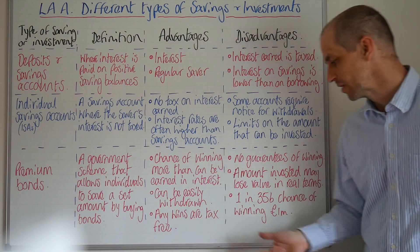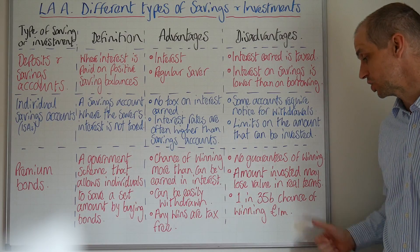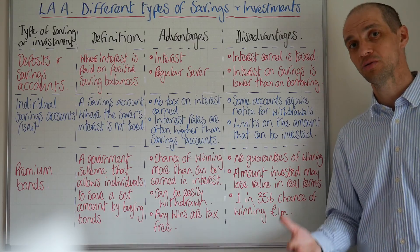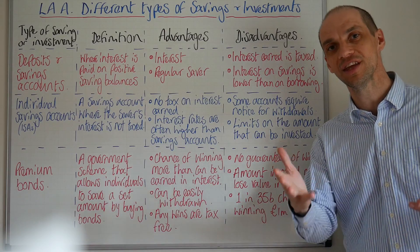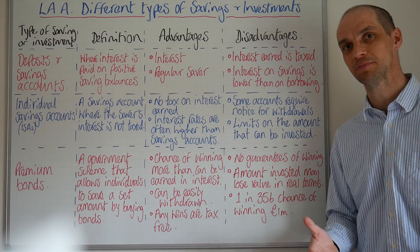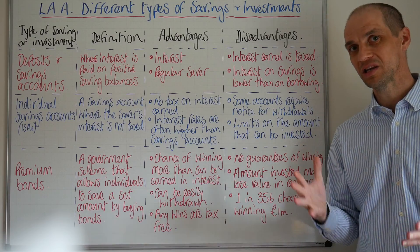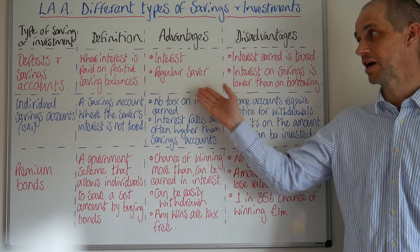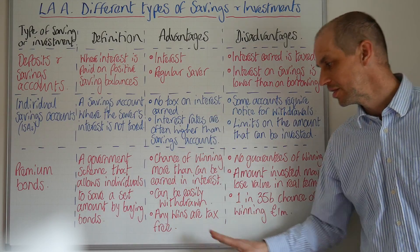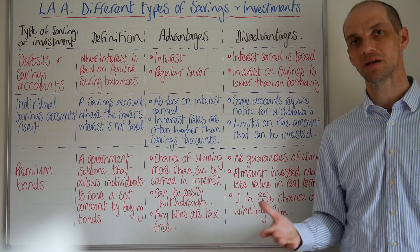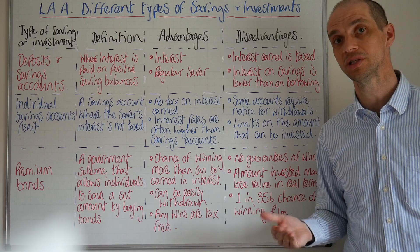There is actually a one in £36 billion chance of winning £1 million, so the chances are considerably worse than the lottery — participating in the lottery actually has a better chance of winning the top prize. So premium bonds are highly controversial. It's also argued that given individual savings accounts offer a tax-free allowance, what is the point of investing in premium bonds? Yes, your wins are tax-free, but that removes a considerable advantage when you consider the ISA product.